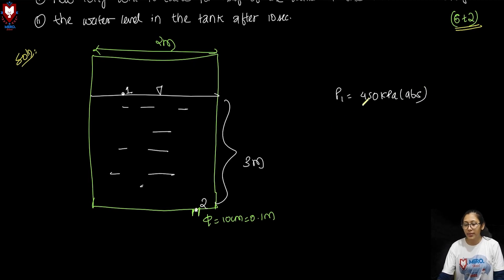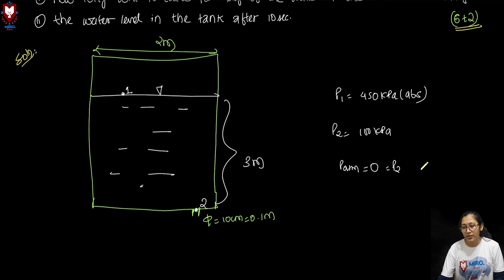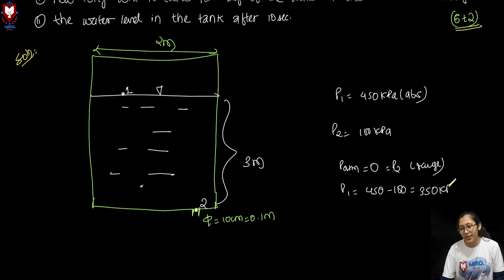Since P1 is 450 kPa absolute and atmospheric pressure P2 is 100 kPa absolute, converting to gauge readings: P2 gauge equals zero, and P1 gauge equals 450 minus 100, which is 350 kilopascal. We will work with gauge readings going forward.